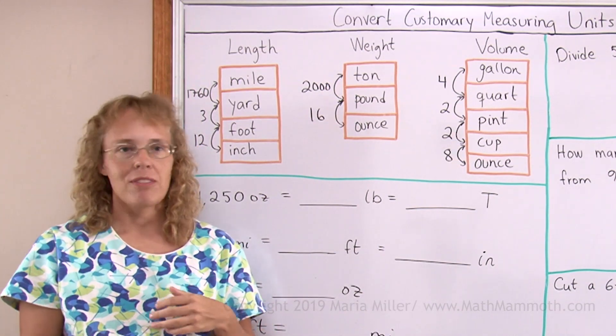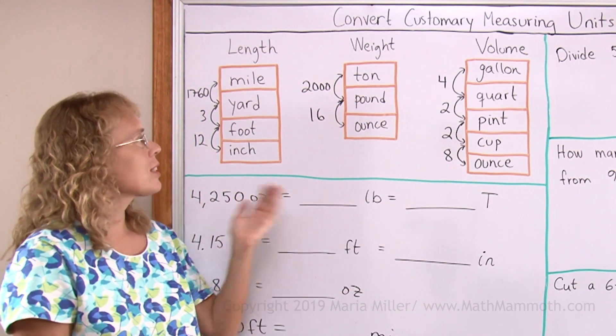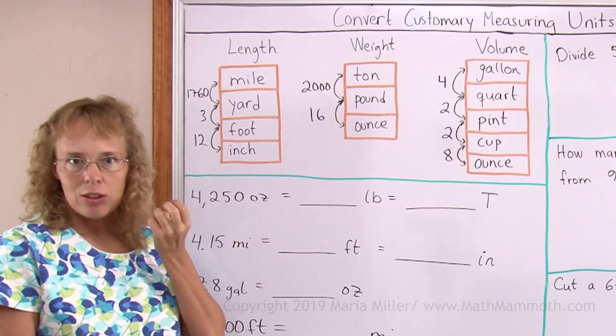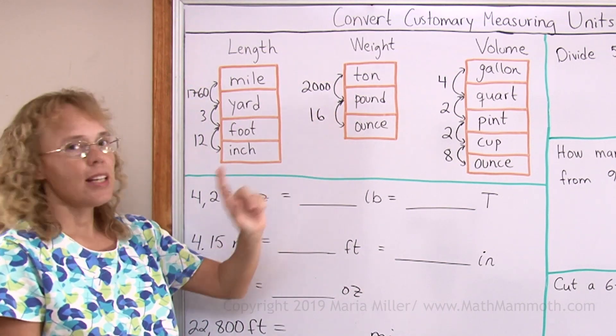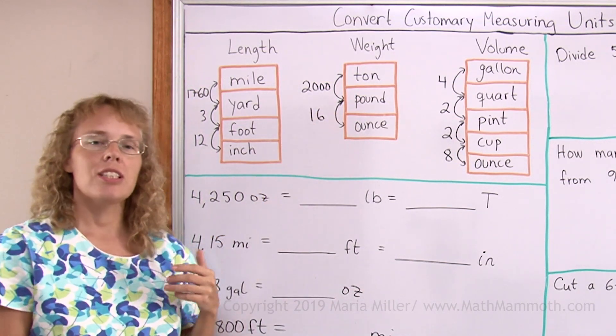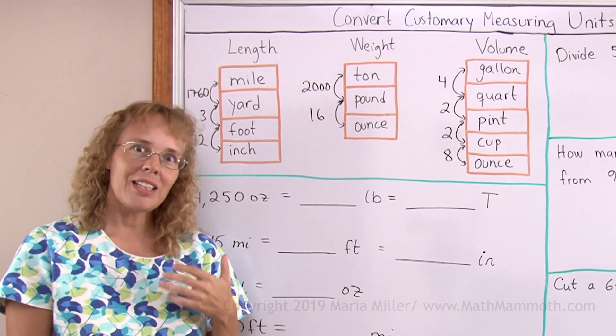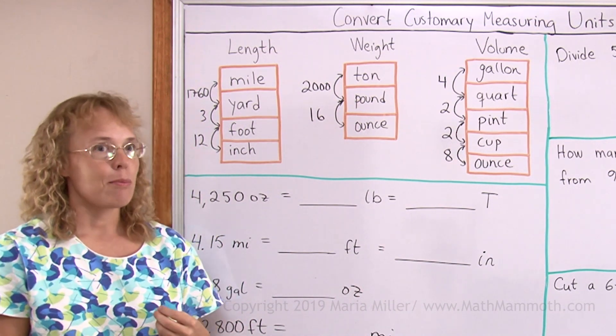Instead we're going to practice some of these conversions between units. And whenever you are converting between two units, such as between pounds and ounces, then the conversion factor is 16. You just have to decide whether you will multiply by it or divide by it.